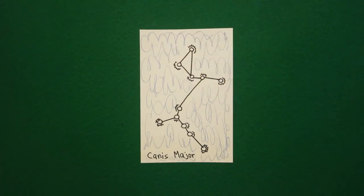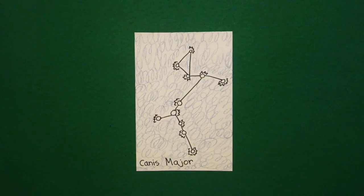Hokey dokey. Alright, let's see what this looks like all colored in. Okay, this is my finished constellation of Canis Major, the greater dog that follows my constellation Orion. Okay, bye-bye.